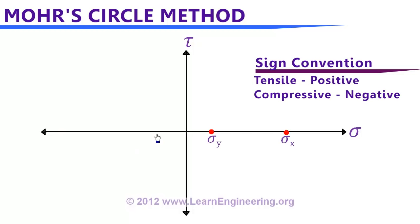Second step: mark normal stress values of your problem over the horizontal axis. You have two normal stress values for this problem, so mark both. Note the sign convention: if stress is tensile, mark it on the positive axis; if compressive, mark it on the negative axis. For this problem, both stresses are tensile, so they are marked on the positive axis.